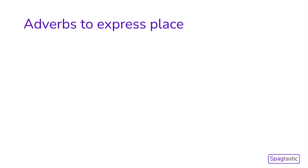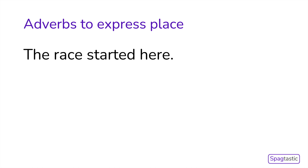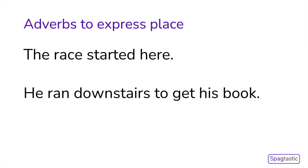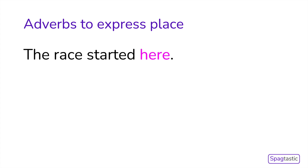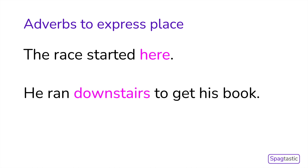Can you spot the adverbs for place in these sentences? 'The race started here.' 'He ran downstairs to get his book.' Why not pause the video and have a think for yourself? The adverb in the first sentence is 'here' and the adverb in the second sentence is 'downstairs'.